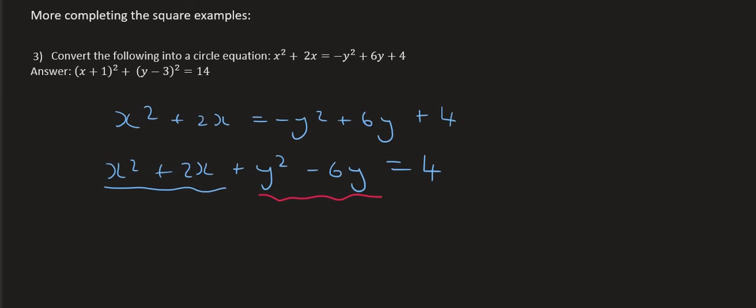So for the x squared part, it's just going to be x squared plus 2x plus bracket. You take this number and you divide it by 2 squared. Then for the y squared part, you say plus y squared minus 6y plus bracket this number over 2 and then squared.